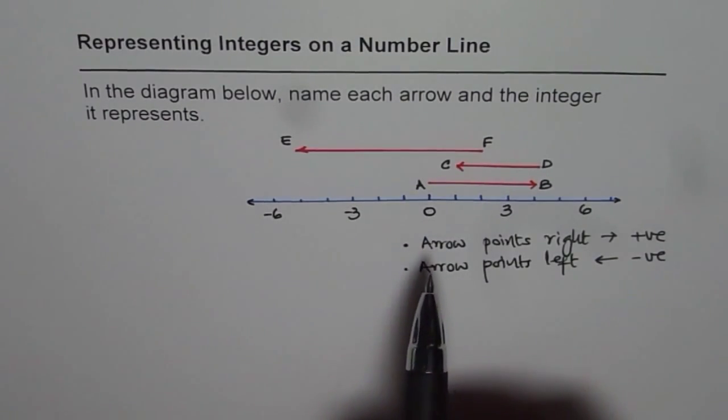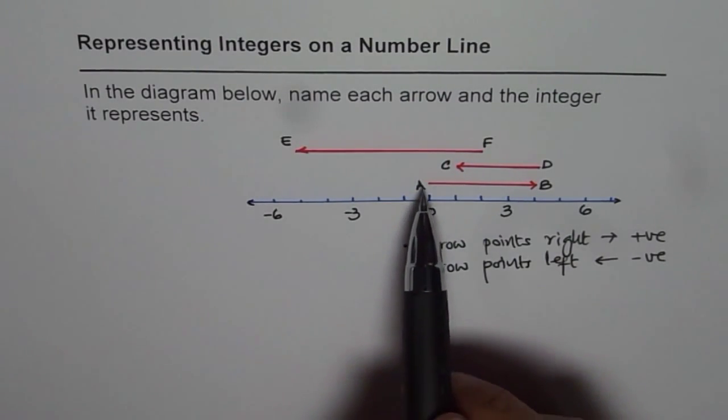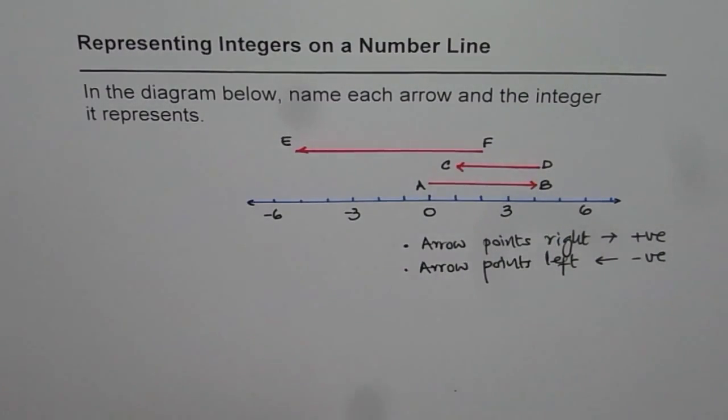Second is how should we name an integer? The name is from starting to end point. The arrow shows from where it's starting and ending at which place.